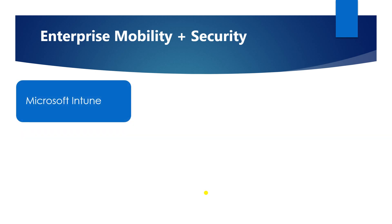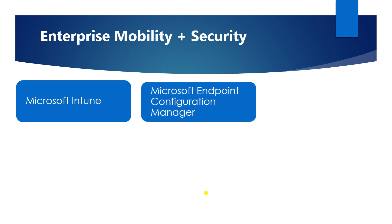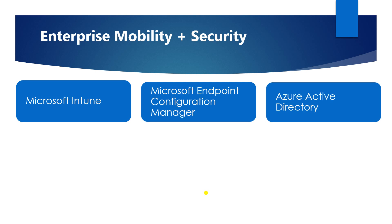I have categorized Enterprise Mobility and Security by studying from the Microsoft site and created this presentation to help you understand what MEM and Intune are. Under this system, Microsoft Intune comes in, Microsoft Configuration Manager comes in, and Azure Active Directory comes in. Intune is a cloud-based management solution for your endpoints like mobile devices, laptops, and tablets. MECM manages devices on-premises.